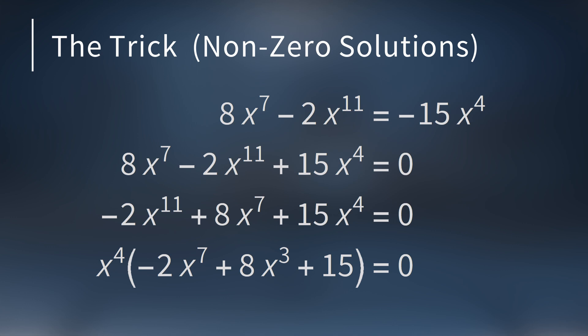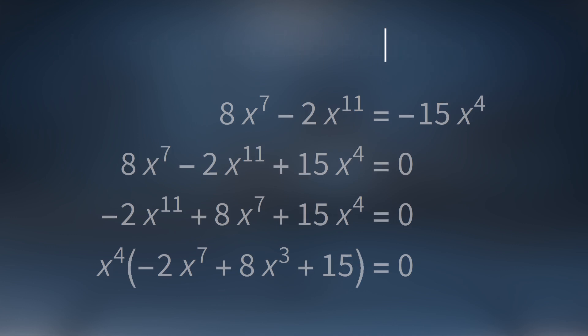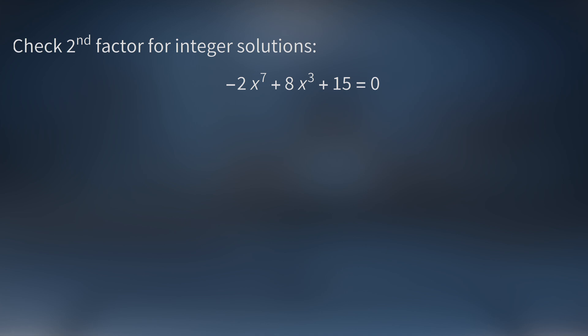Next factor out the largest power of x. For this equation that's x⁴. So we know that x = 0 is an integer solution. But now we have to check the second factor for any integer solutions. Here's the clever trick. Move the constant term to the other side. This means that every term on the left hand side contains a power of x. So let's simply factor out x. We could factor out x³, but to see the trick we need to factor out just x.